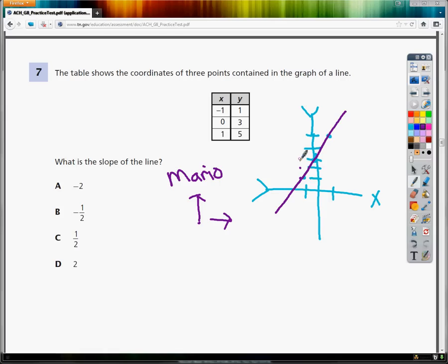I go up one, two. So that would be plus two. And then I go over one. So I just do the division. Two divided by one is two. So the answer for slope here is just two.